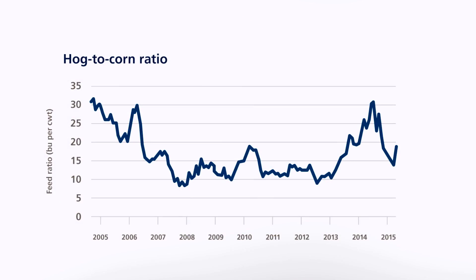A low ratio suggests that producers will pay more for feed costs relative to the revenues received when selling the hogs. Looking at the chart, you can see that the hog-to-corn ratio was on a downward trend between 2005 and 2008. It bottomed out when feed prices reached a peak and hog prices had declined. In 2010, the ratio climbed briefly, but things didn't really improve much. During this period, profitability was lower due to a perfect storm of events: a global recession, high grain prices, a stronger Canadian currency, and the outbreak of H1N1.